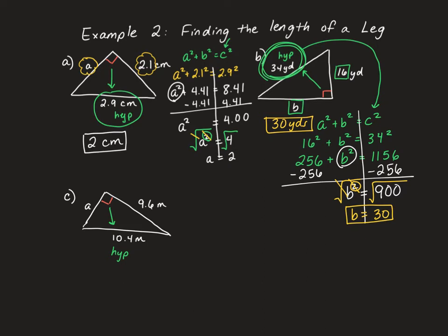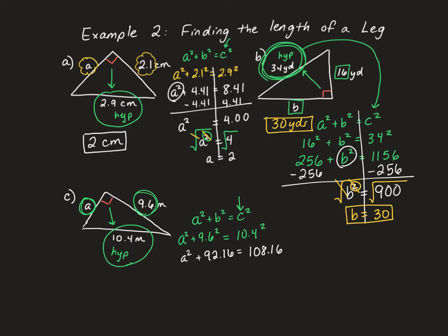For the last question, we have A squared plus B squared equals C squared. Remember that 10.4 is the hypotenuse, so it equals C squared, and we substitute A and 9.6 into the equation. Pause the video and try this on your own. You should have gotten 9.6 squared equals 92.16 and 10.4 squared equals 108.16. Subtracting 92.16 from both sides gives A squared equals 16. Taking the square root, the square root of 16 is 4. So the answer is 4 meters.